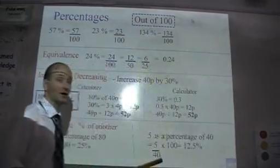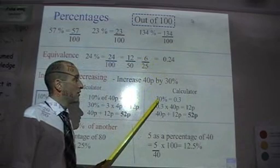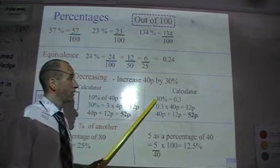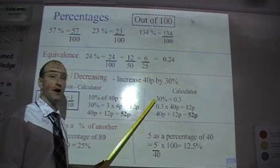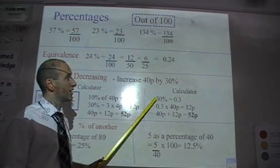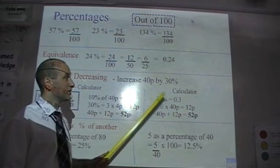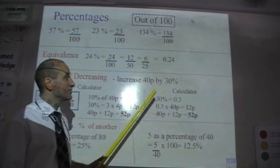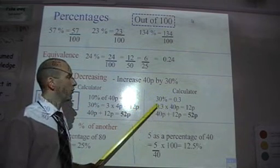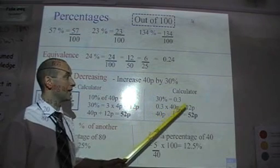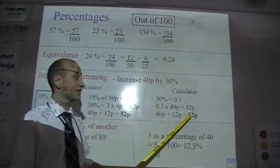Now, same question, but using the calculator. Much simpler. Best method here, write your percentage as a decimal. We saw above that percentages are out of 100, so 30% as a decimal, or as a fraction is 30 out of 100, which as a decimal is 0.3. So I'm finding 0.3 of 40p. 0.3 times 40p is 12p, and again, I just add it on to get my increased amount.